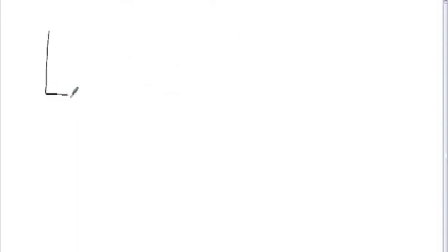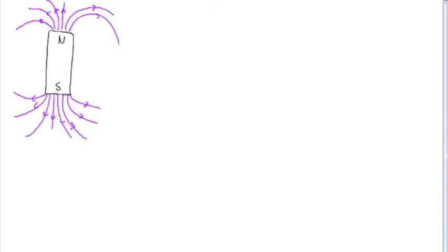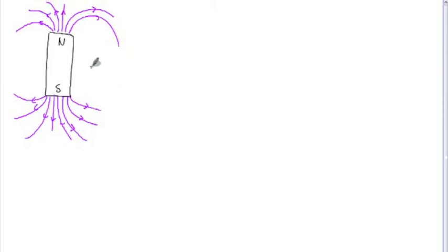Magnetism is a little more tricky. All magnets have a north and a south pole. This creates a magnetic field around the magnet. And if you put metal objects in this field, they will be pulled towards the magnet or pushed away from it.